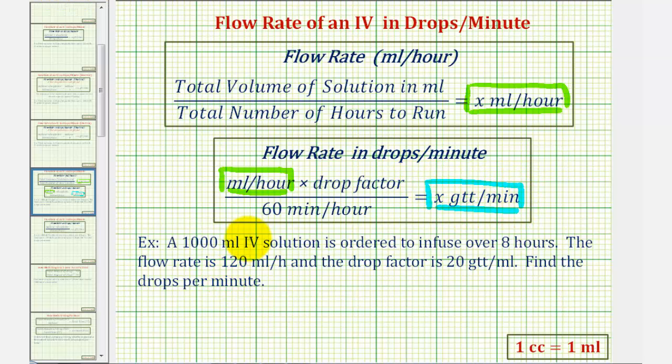To find the flow rate in mL per hour, we would have 1,000 milliliters divided by eight hours. This would be 125 mL per hour.